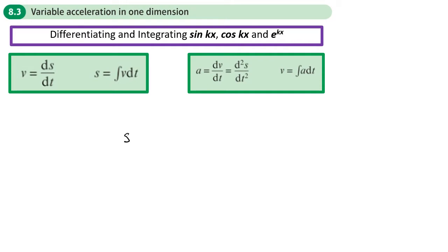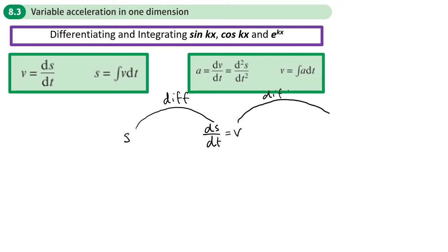If s is our displacement, we differentiate to get ds/dt with respect to time, which is the velocity. Differentiating again gives us either the second derivative of displacement or the first derivative of velocity with respect to time, which is the acceleration.